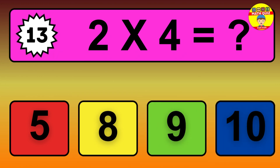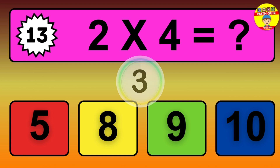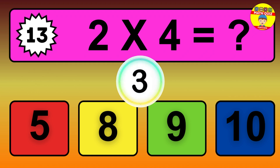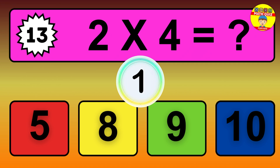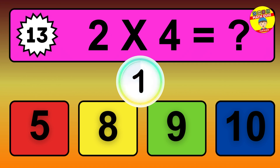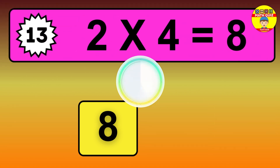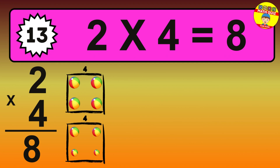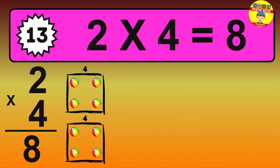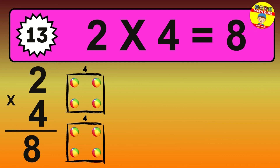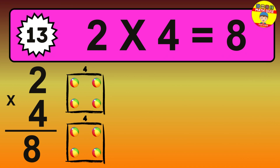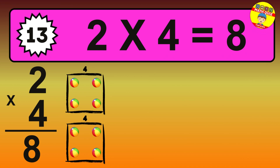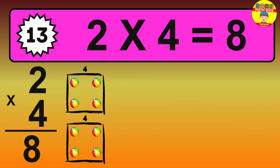Question 13. 2 times 4 equals what? The answer is 2 times 4 is 8. To calculate, we have 2 groups with 4 balls each. So how many balls do we have? 8 balls.